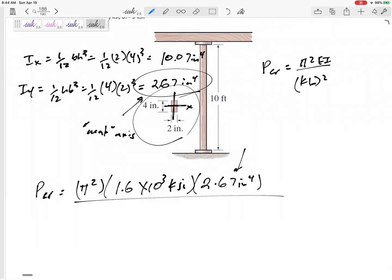And then divided by K 0.7 and then the length 10 feet, but be careful. Kips per square inch, inches to the 4th, that's got to be in inches. So 10 times 12, so 120 inches. And square that.